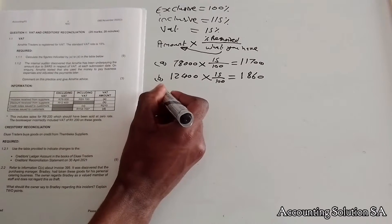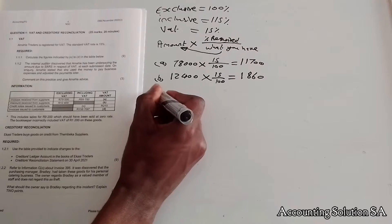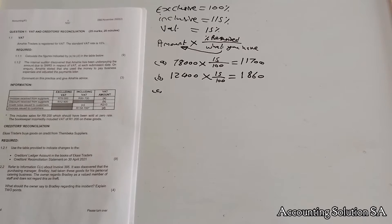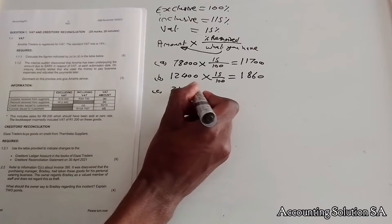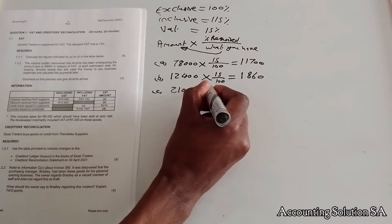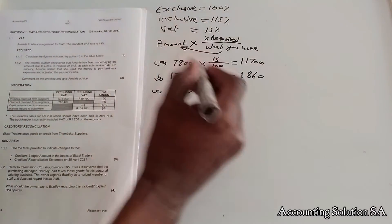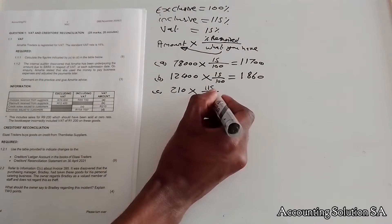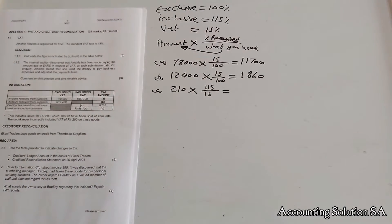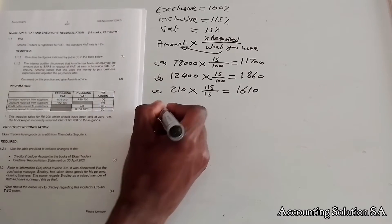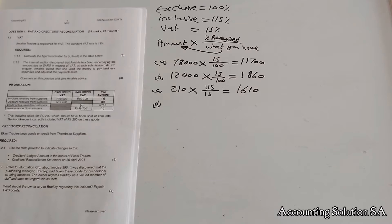Now let's go to figure C. For figure C, we are looking for the inclusive amount but we don't have the exclusive. Using the formula: amount multiplied by the required percentage — we require inclusive which is 115 — then divide by what we have, which is the VAT amount at 15 percent. It's going to give you an amount of 1,610.